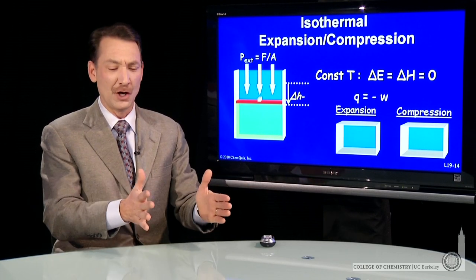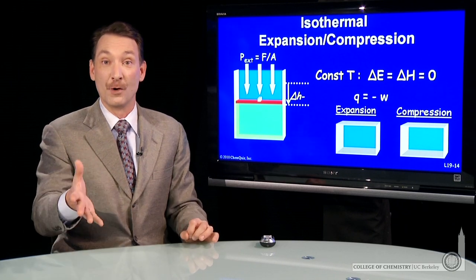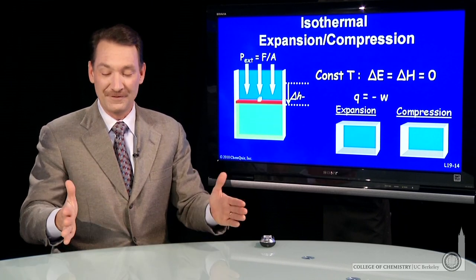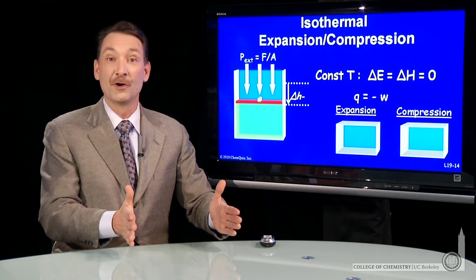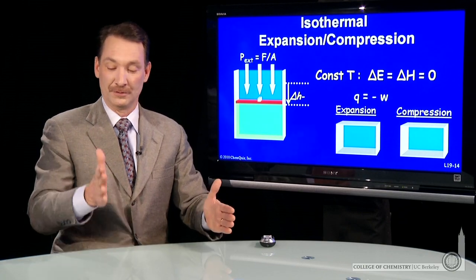So how can heat flow or work be done if the energy doesn't change? Well, the work and heat just have to balance each other with opposite sign. If you do a joule of work on the system, the system has to lose a joule of heat. Joule for joule.